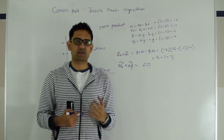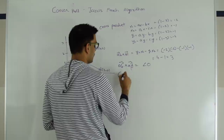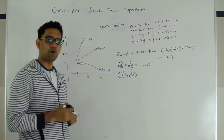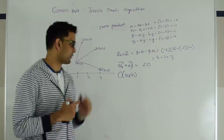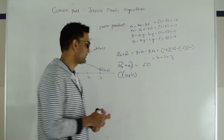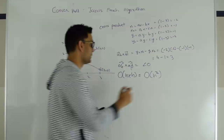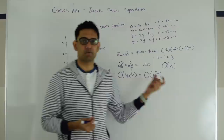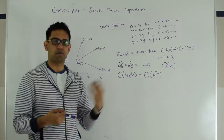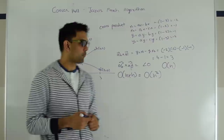The time complexity of the Jarvis March algorithm is O(N * H), where N is the total number of points and H is the number of points on the boundary. If the number of boundary points is small, this algorithm is very efficient. In the worst case it could be O(N²). The space complexity is O(N) because in the worst case we might be holding all the points in the collinear points list.